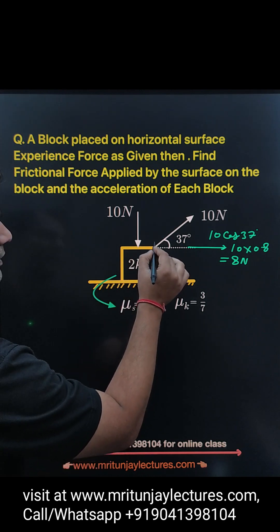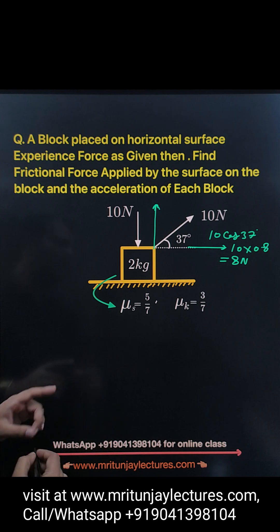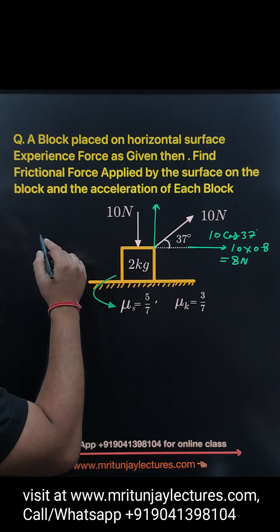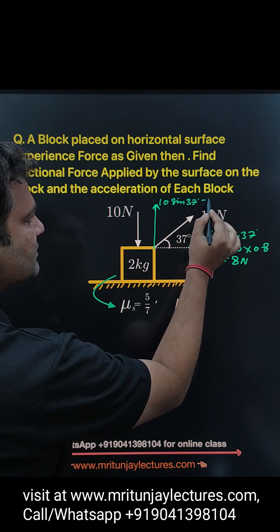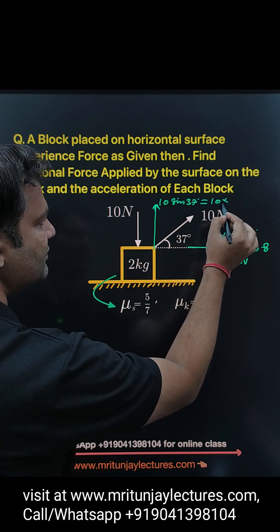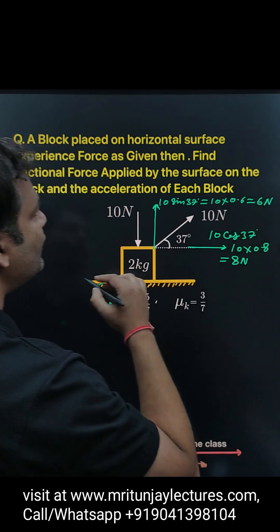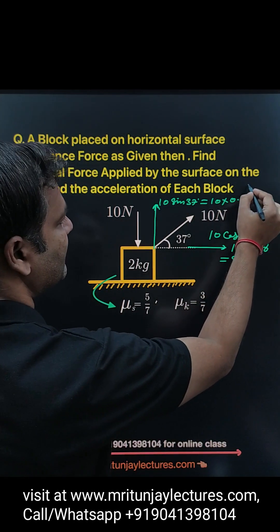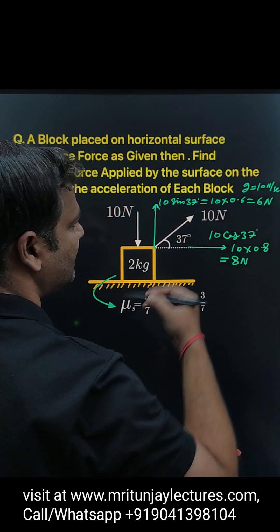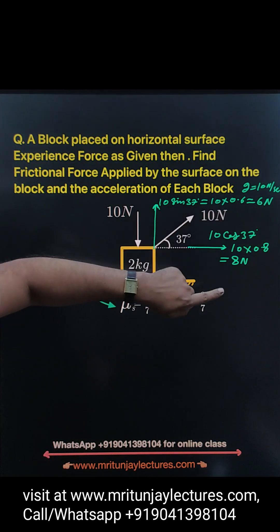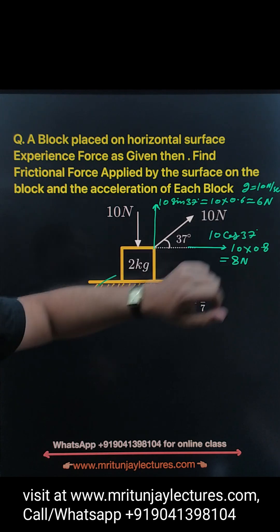The vertical force, meaning the component of 10 Newton in the y direction, is 10 sin 37. So 10 into sin 37 equals 0.6, that is 6 Newton. I have taken g equal to 10 m/s². So the component of that force along the x-axis is 8 Newton and along the y-axis is 6 Newton.